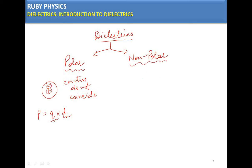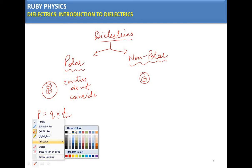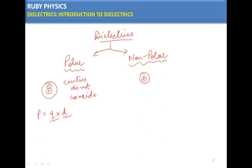Similarly, we have non-polar dielectrics. In non-polar dielectrics, the center of the positive charge and the center of the negative charge coincide, so the dipole moment is zero. These are known as non-polar dielectrics. Examples of polar dielectrics include HCl molecule and water — both are polar.